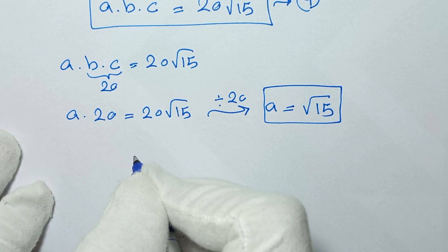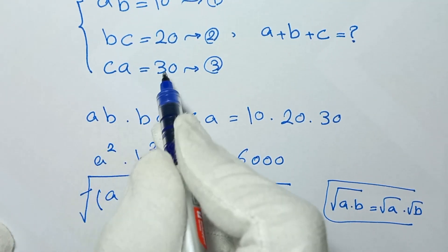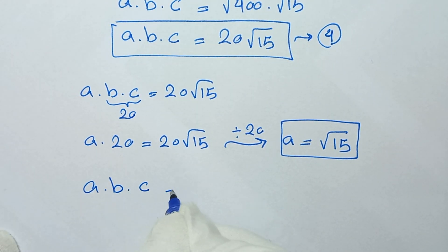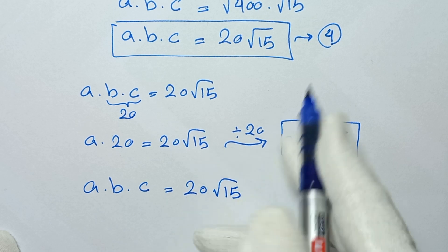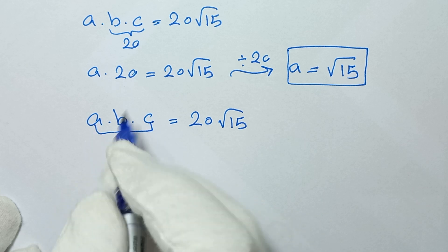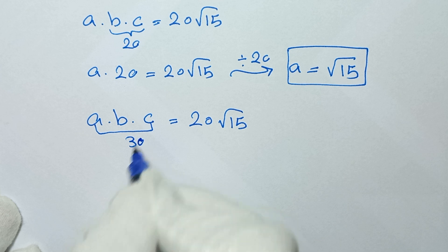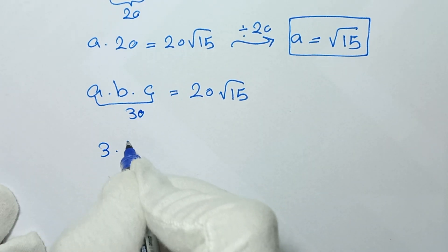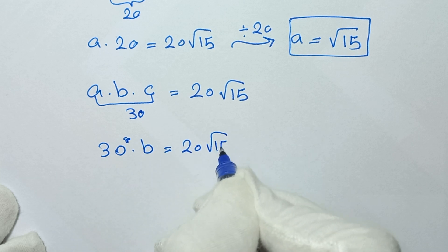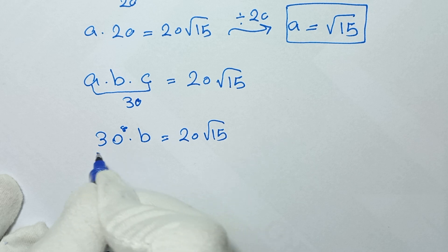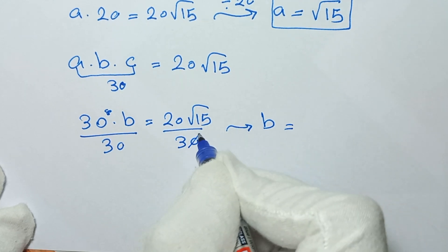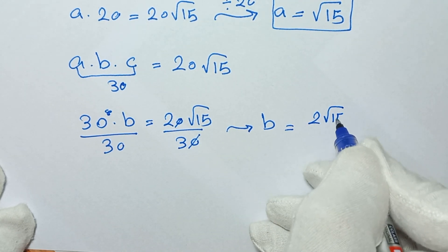To find the value of B, from equation number 3, CA equals 30. We have ABC equals 20√15 from equation number 4, and CA equals 30. So 30 times B equals 20√15. Dividing both sides by 30, B equals 2√15 over 3.